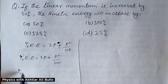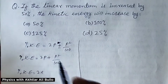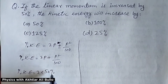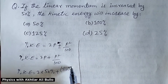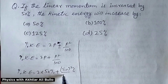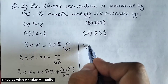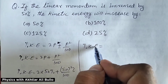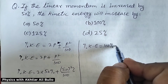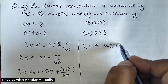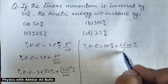So, percentage increase in kinetic energy = 2 × (percentage change in momentum) + (p²/100). Substituting p = 50%: that gives 2 × 50% = 100%, plus the square of 50, which is 2500, divided by 100.